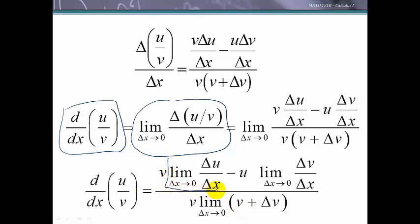When we do that this is what we end up with. Now let's look at this. This here is Leibniz definition. This is just du dx and this one is just dv dx. This one as delta x goes to 0 delta v also goes to 0 and we're left with a v times another v.